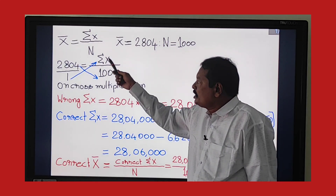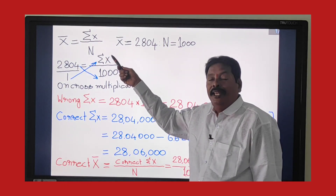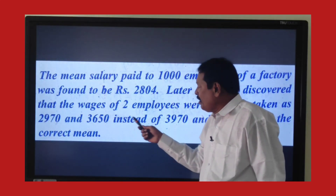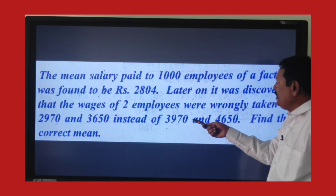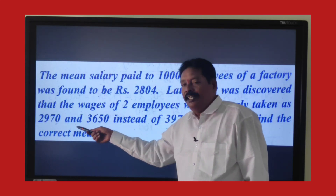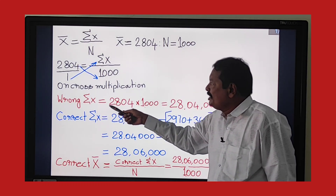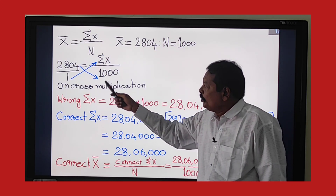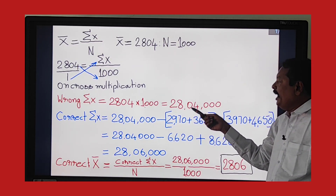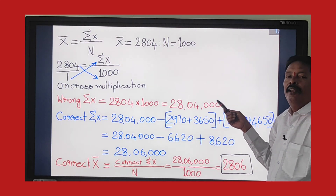We call it the wrong Σx because the total wages of the 1,000 laborers is wrongly given. The correct figures for two laborers are 3,970 and 4,650, but the wrong figures were used instead. So wrong Σx = 2,804 × 1,000 = 28,04,000 rupees. This is the total wage of the thousand laborers, which is wrong.